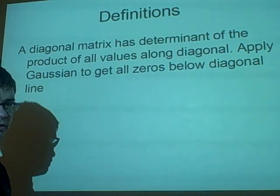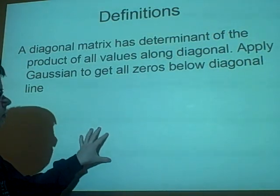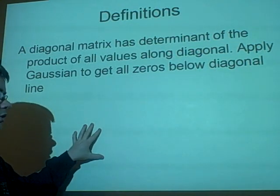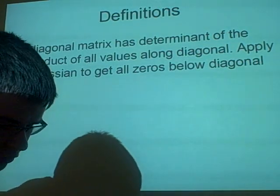So, and then you can just simply, after you've got zeros all around there, this being the lower left triangle, if you want to call it, then you can just multiply down the diagonal and get your determinant. So, I've got an example.